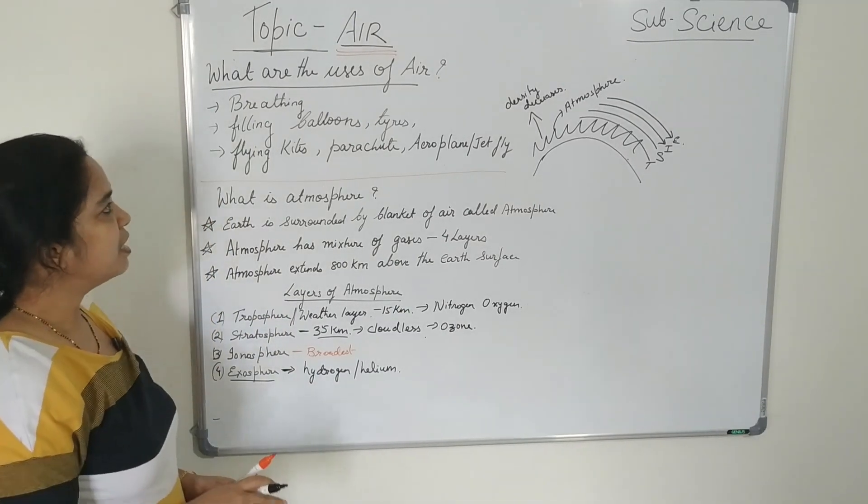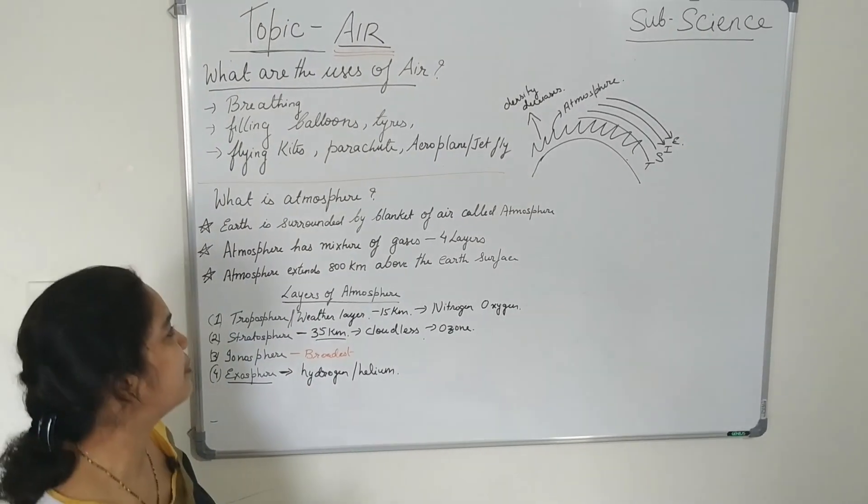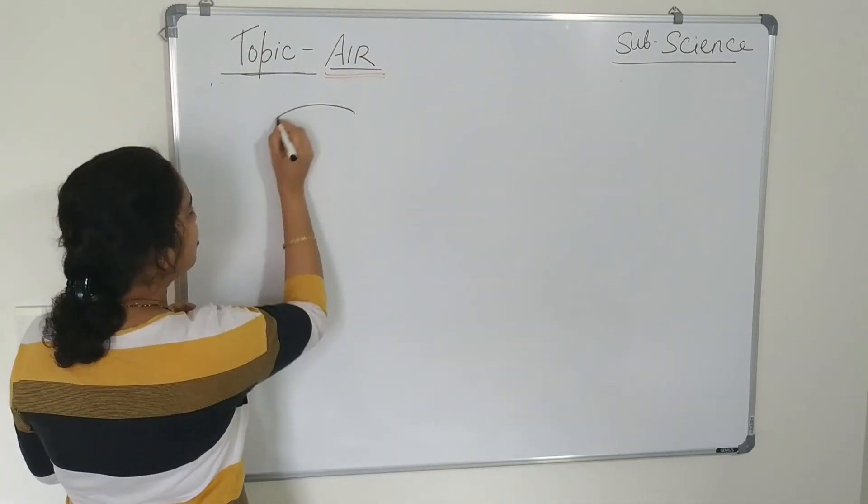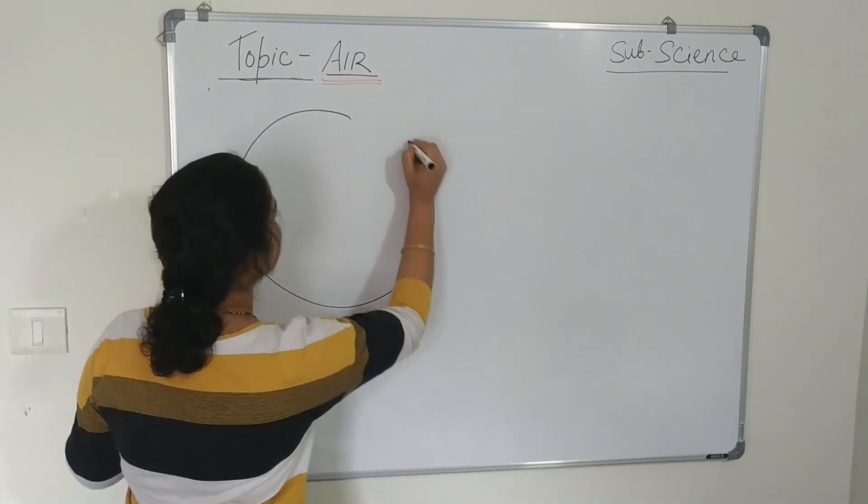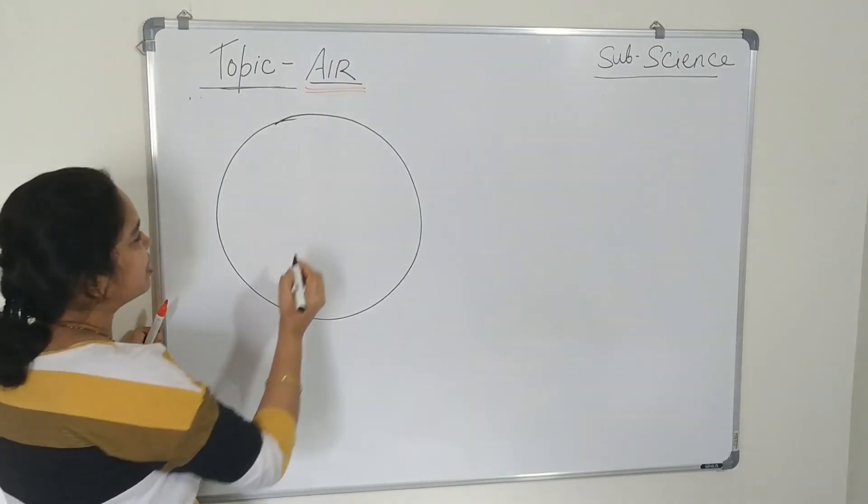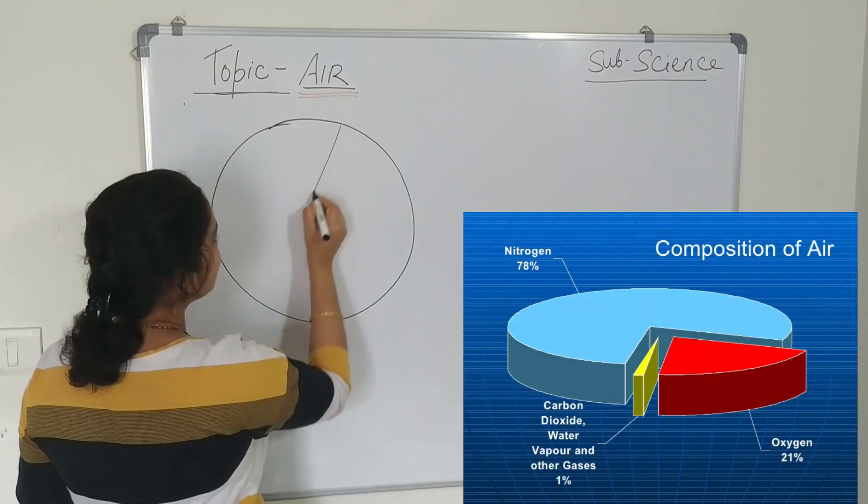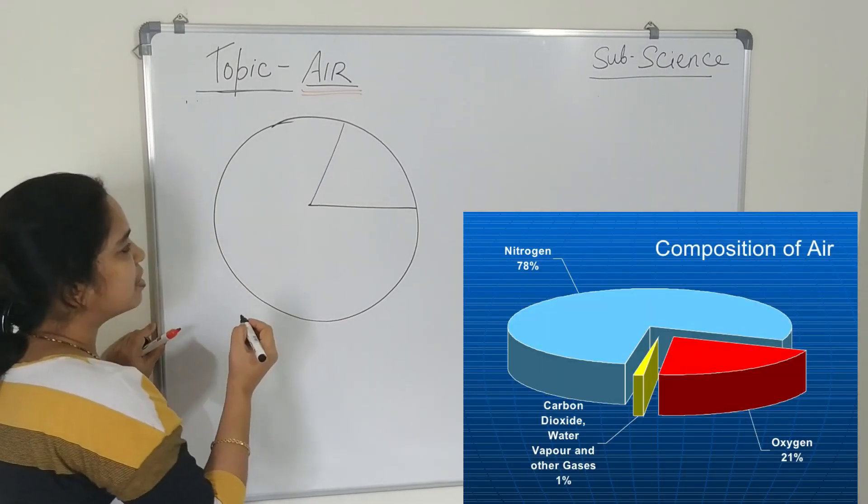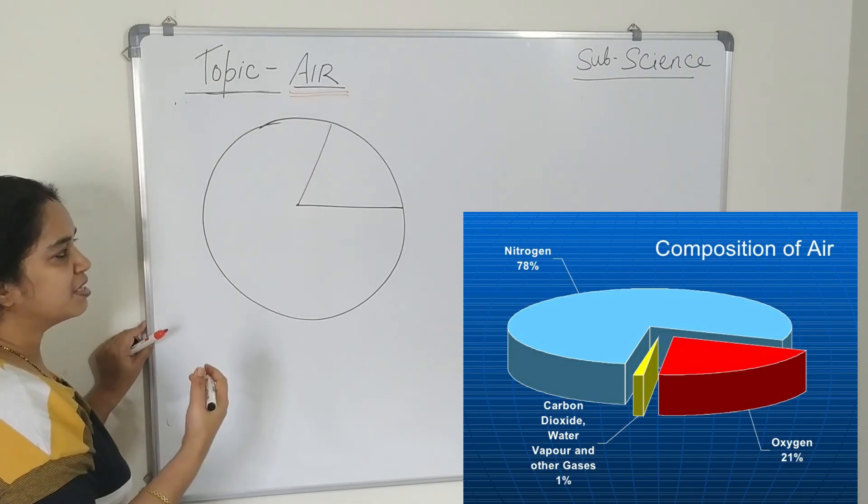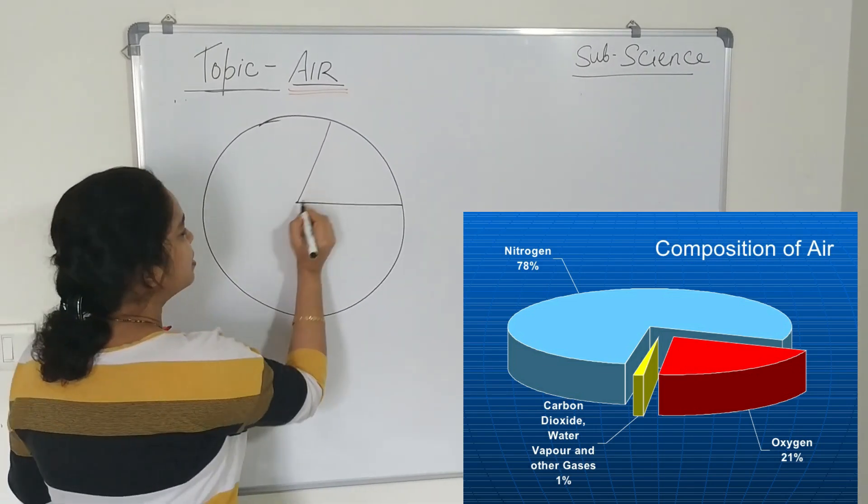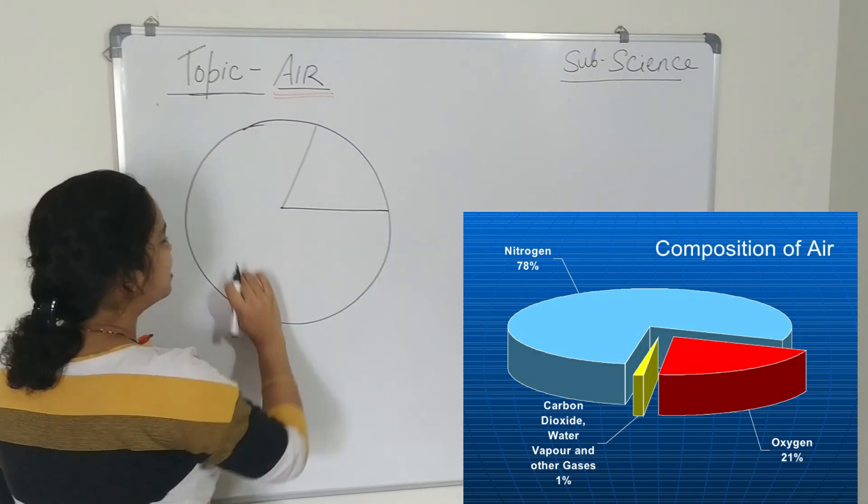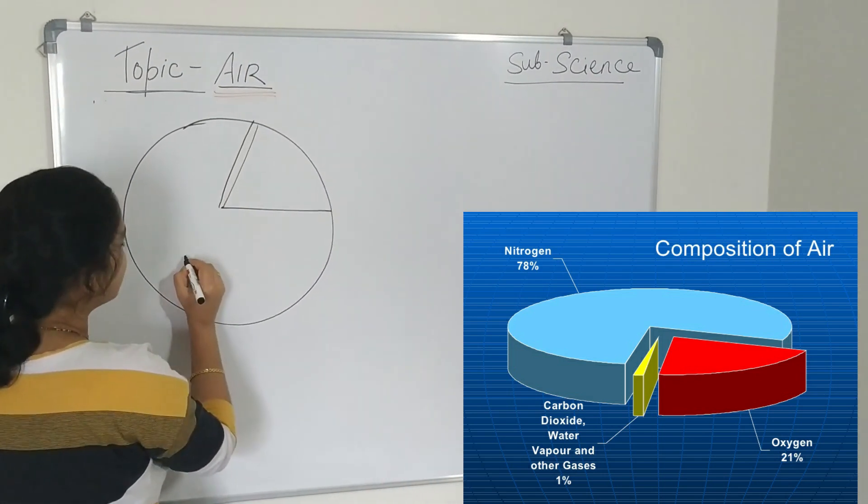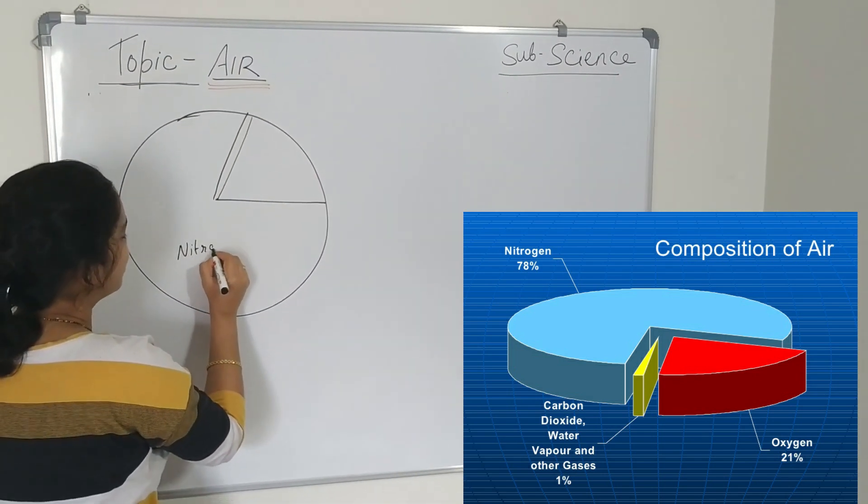Now we will learn about the composition of air. Learn about the composition of air. I am drawing a pie chart for you in which the composition of different gases are there. First, majorly it constitutes the nitrogen. Nitrogen gas is present.